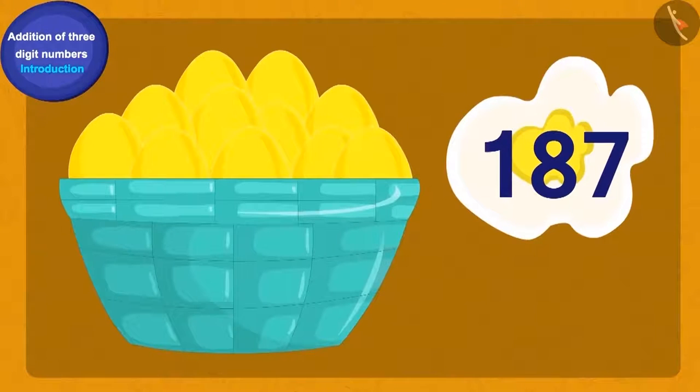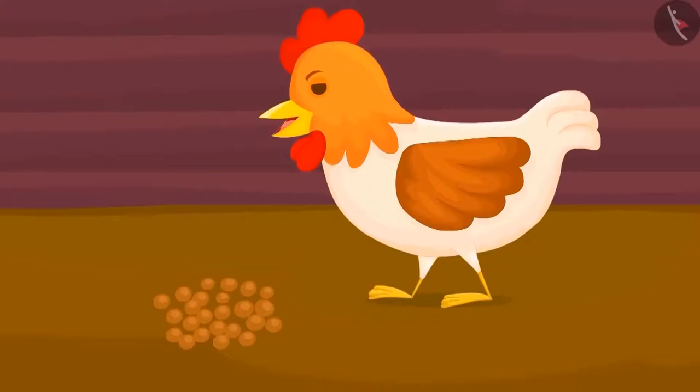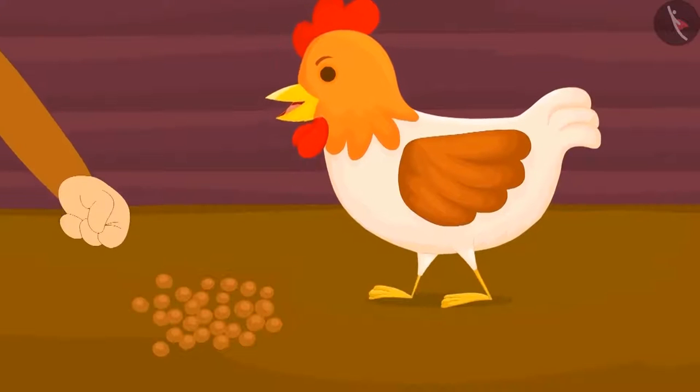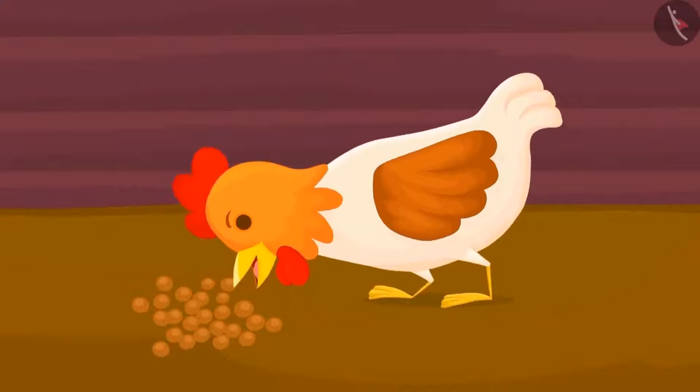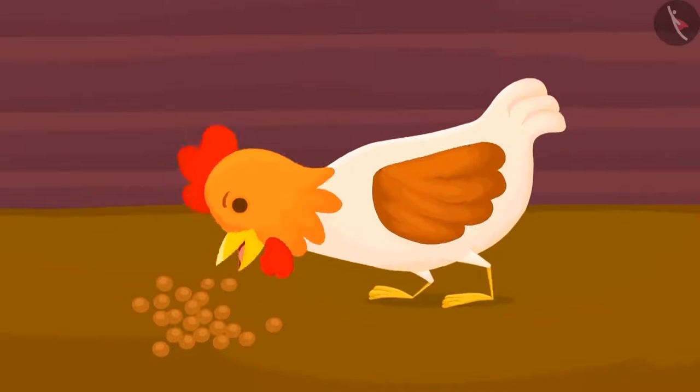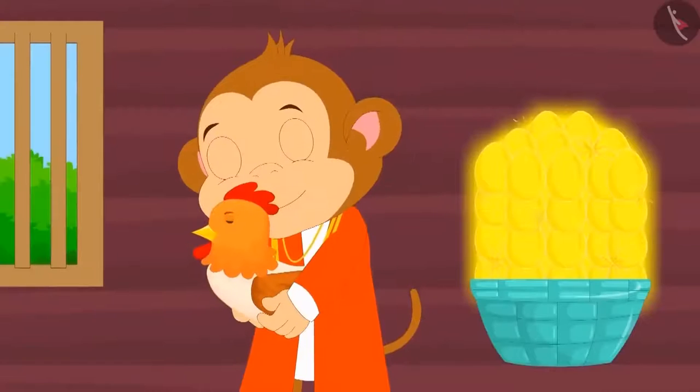Oh, wow! Baban now had a total of 187 gold eggs. Baban now started feeding his hen with fodder and the hen kept giving him more golden eggs. After all, Baban became the richest man in the village.